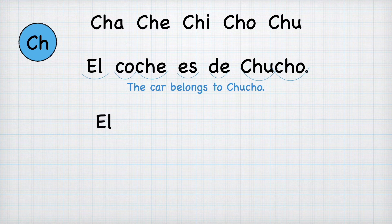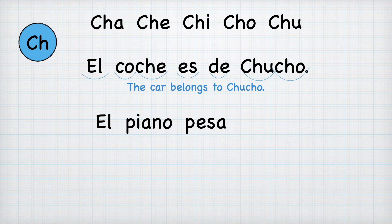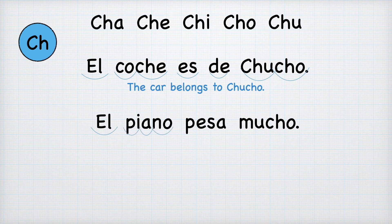Let's look at a second one. El. P-i is pi, then we have the a, a, n, o, no — piano. P-e-s-a: pesa. M-u: mu, and then we have the che-o combination which is cho — mucho. El piano pesa mucho. El piano pesa mucho. The piano is too heavy.